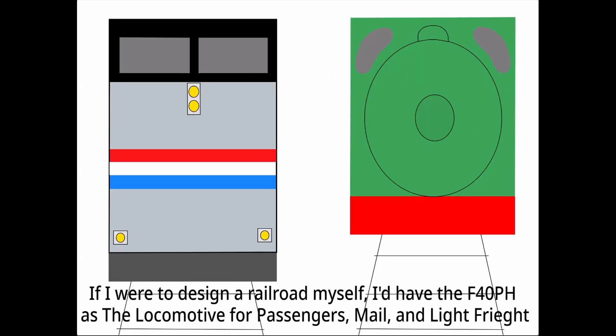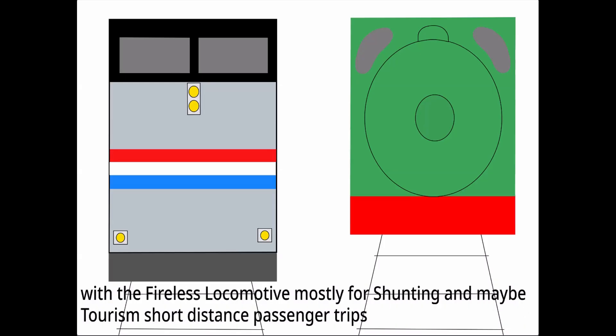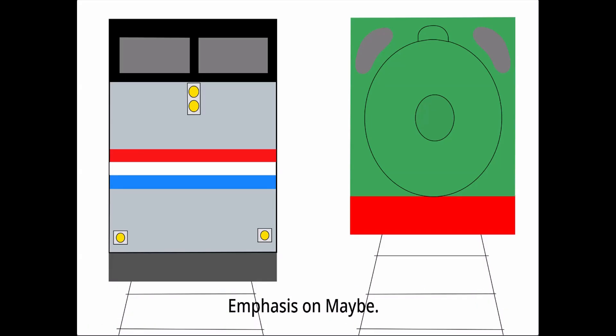If I were to design a railroad myself, I'd have the F40PH as the locomotive for passengers, mail, and light freight, with the fireless locomotive mostly for shunting, and maybe tourism short distance passenger trips. Emphasis on maybe.